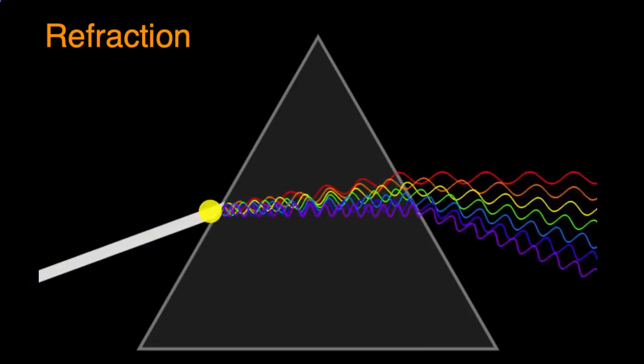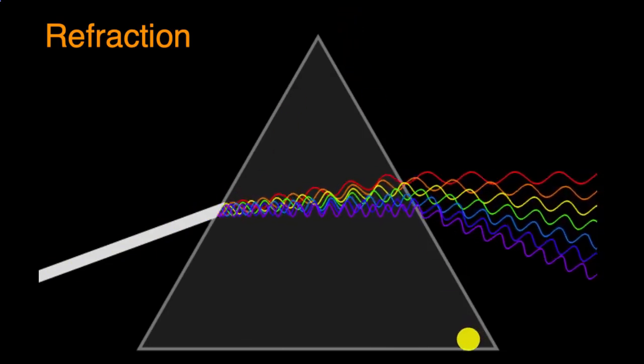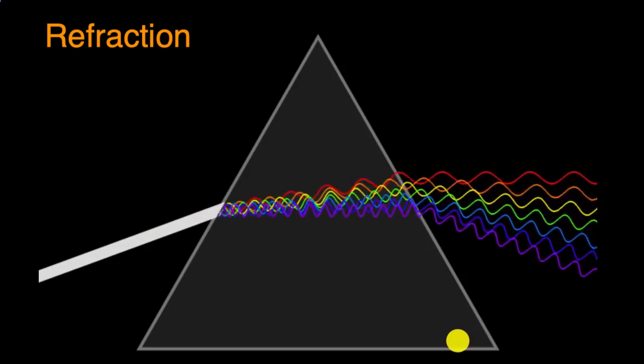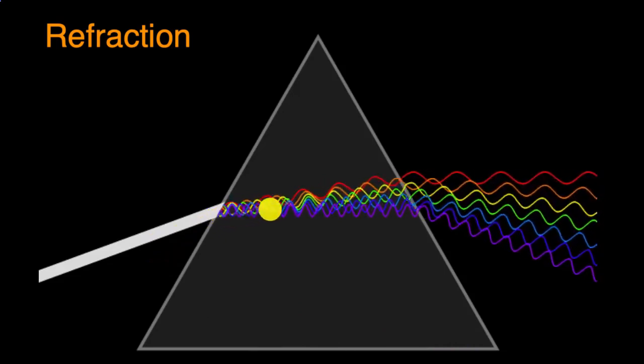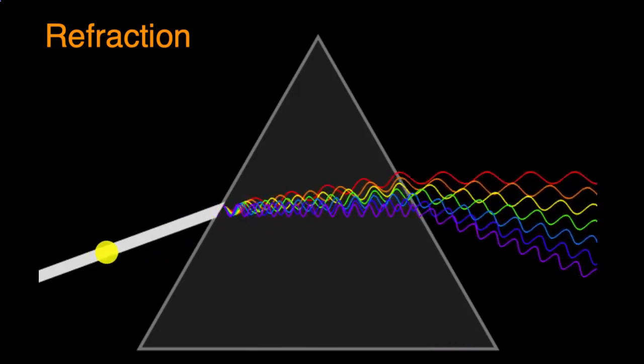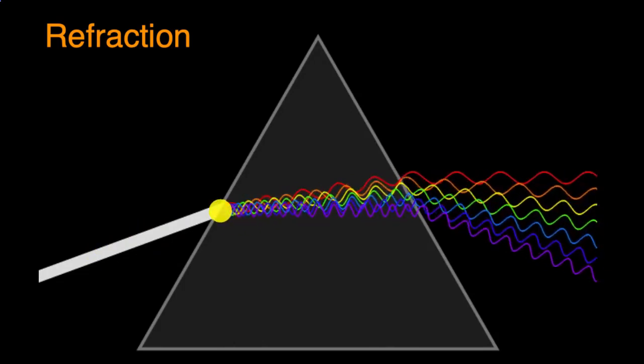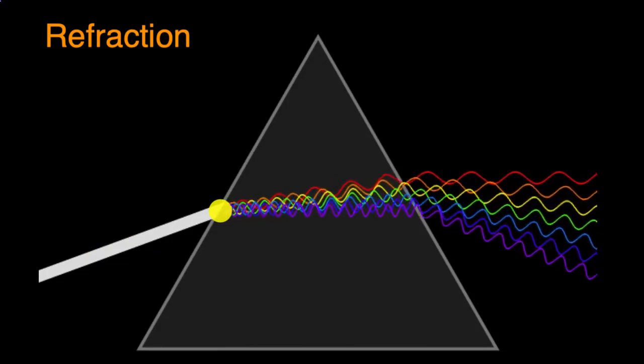But we see something really interesting happening here. When it hits this glass prism, I know it just looks like a gray triangle to you, but imagine it as a triangular piece of glass, and it's hitting it at an angle, what this animation shows us is that the path of the light actually gets bent. And not only does it get bent, but the different frequencies of the light get bent by different amounts.